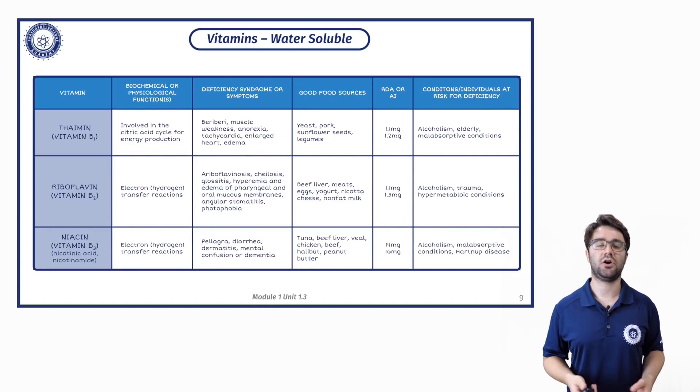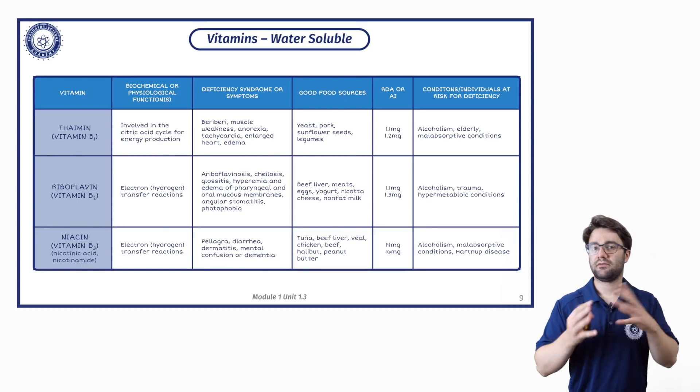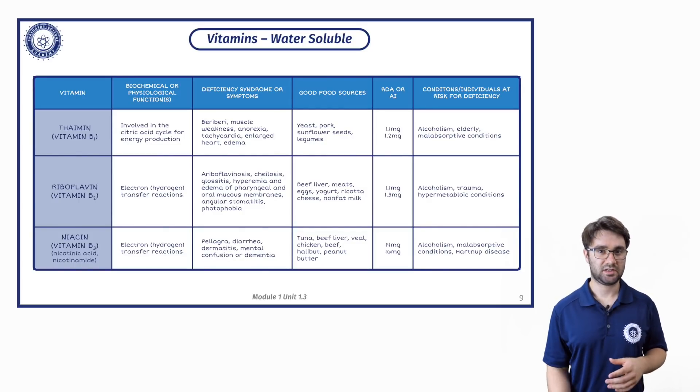But just when it says electron transfer reactions, it means it's involved in energy production. Good sources of B vitamins, you're looking at things like meats tend to have a lot of B vitamins in. And then you're looking at yeast is a really good source of B vitamins. And then things like seeds and legumes and nuts and stuff, dairy as well. Animal products and then legumes and seeds, generally speaking.